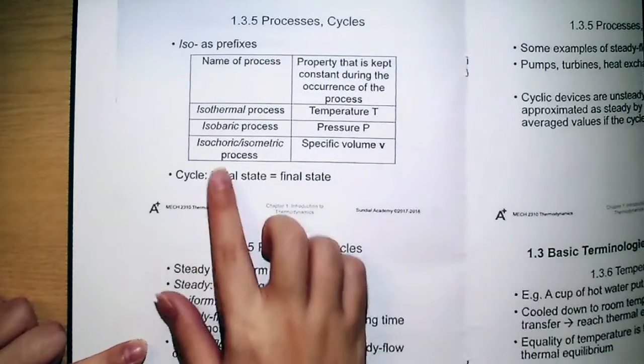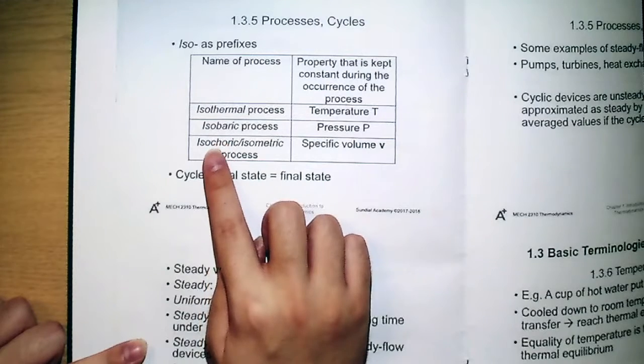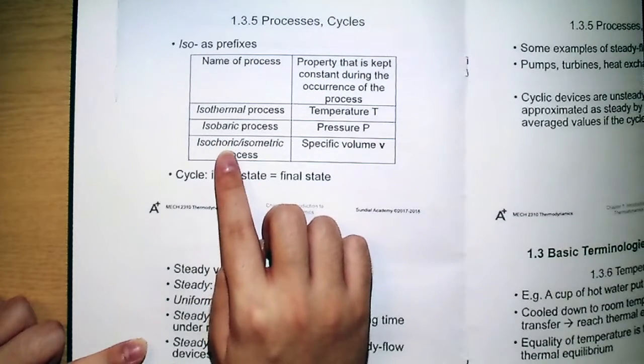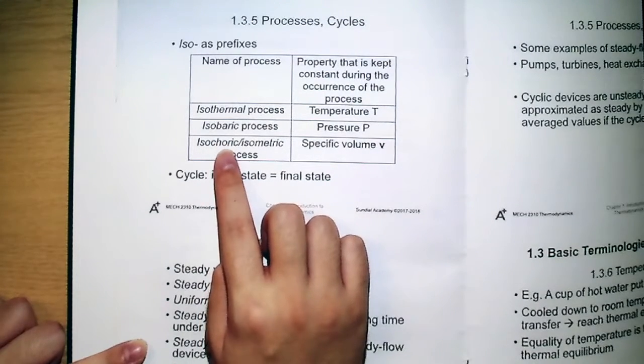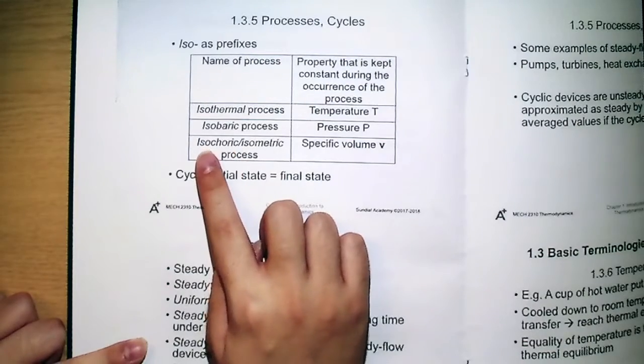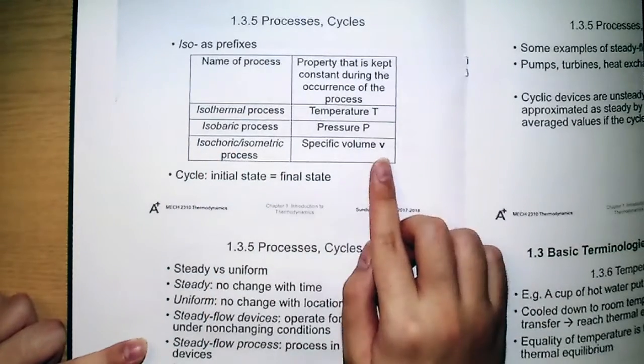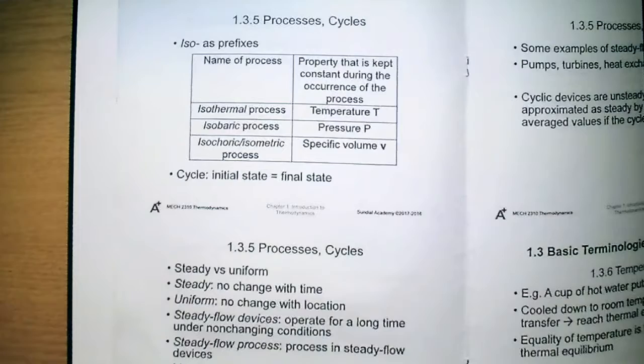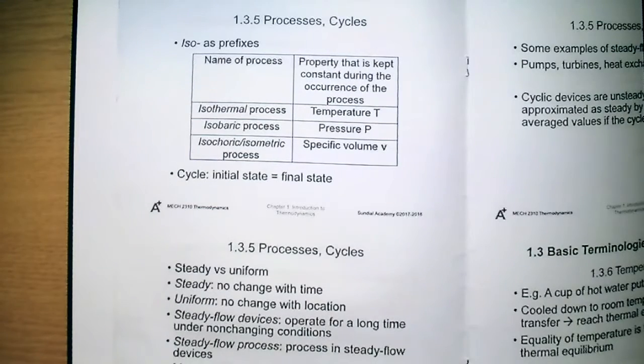And for the third one, that would be isochoric. This is a little bit special, because choric is not a very common word you see, but it actually means volume. And iso means no change, so again, here means that the specific volume is constant.